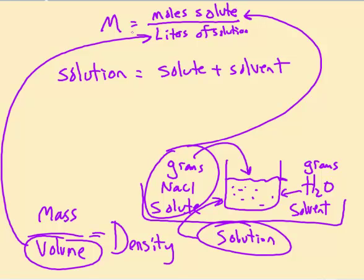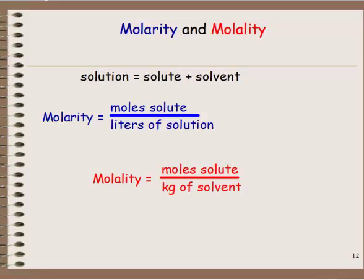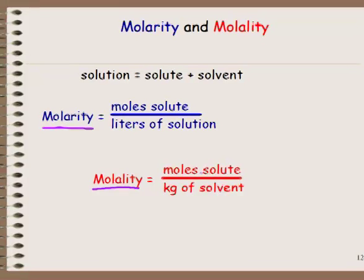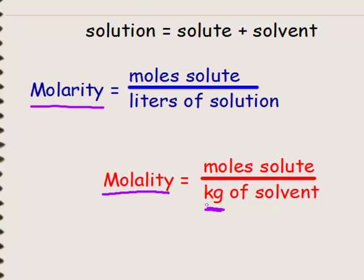If we're given the volume and the density, we can find the mass. If given the mass and the density, we can find the volume. This is being brought up because in the study of colligative properties, there is a unit of concentration called molality. Molarity is moles of solute over liters of solution. Molality — change that one little letter — is moles of solute divided by kilograms of only the solvent, not the whole solution — just the solvent, in kilograms.